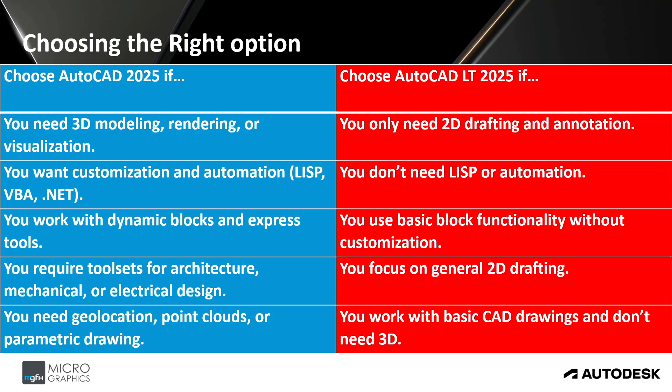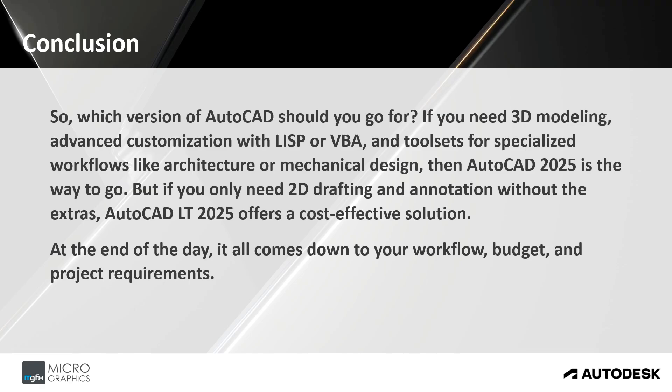Choosing the right option: choose AutoCAD 2025 if you need 3D modeling, rendering, or visualization; if you want customization and automation with LISP, VBA, or .NET; if you work with dynamic blocks and express tools; if you require tool sets for architecture, mechanical, or electrical design; or if you need geolocation, point clouds, or parametric drawing. Choose AutoCAD LT 2025 if you only need 2D drafting and annotation, don't need LISP or automation, use basic block functionality without customization, and your focus is generally on 2D drafting without 3D.